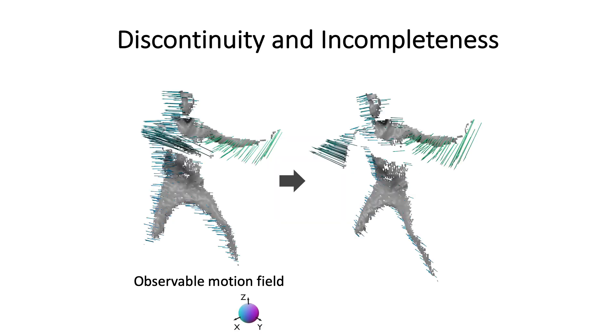However, due to occlusions and limitations of range sensors, existing tracking methods only handle the visible surface. This causes discontinuity and incompleteness in the motion field, as shown in the red area.